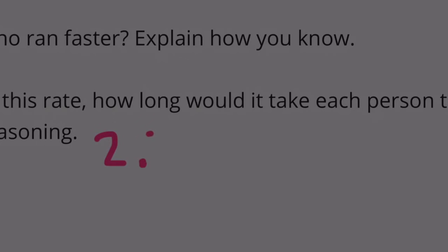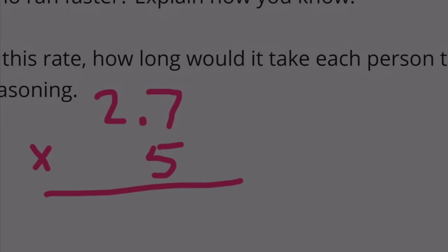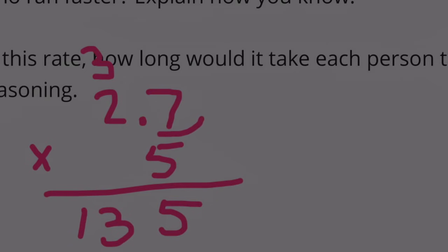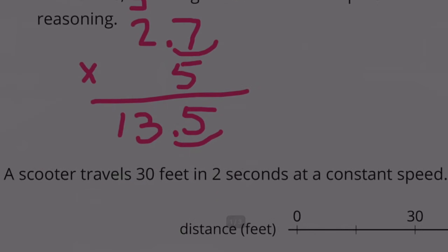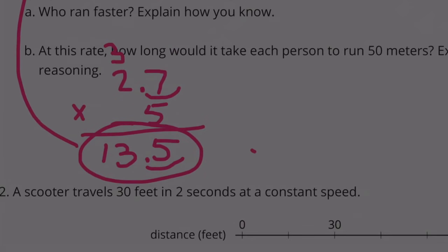2.7 times 5: 7 times 5 is 35. 2 times 5 is 10, plus 3 is 13. And we're going to move the decimal over one place. It's going to take Han 13.5 seconds. So Han runs it in 13.5 seconds.